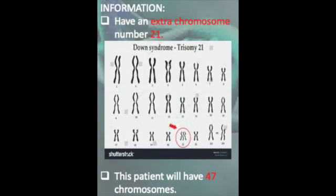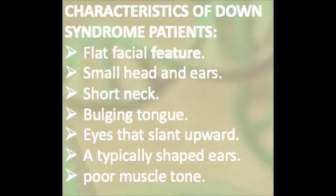For your information, Down Syndrome is a genetic disease having an extra chromosome, especially on chromosome number 21, which you can see on my e-poster. Normal people only have 46 chromosomes, but this patient will have 47 chromosomes.